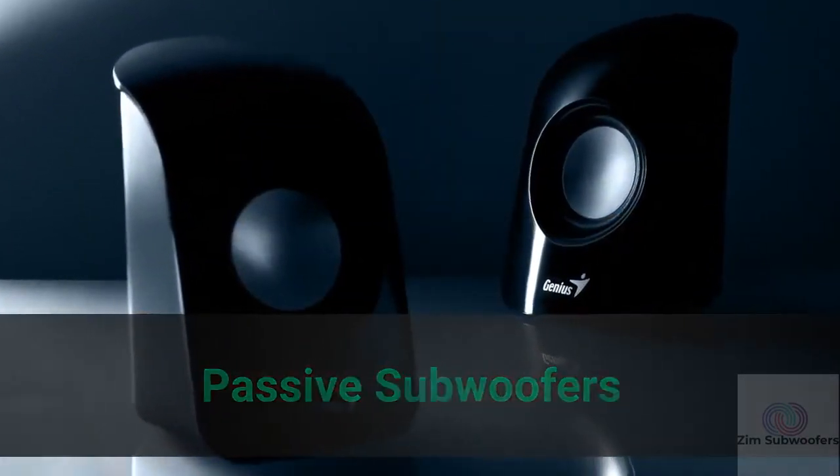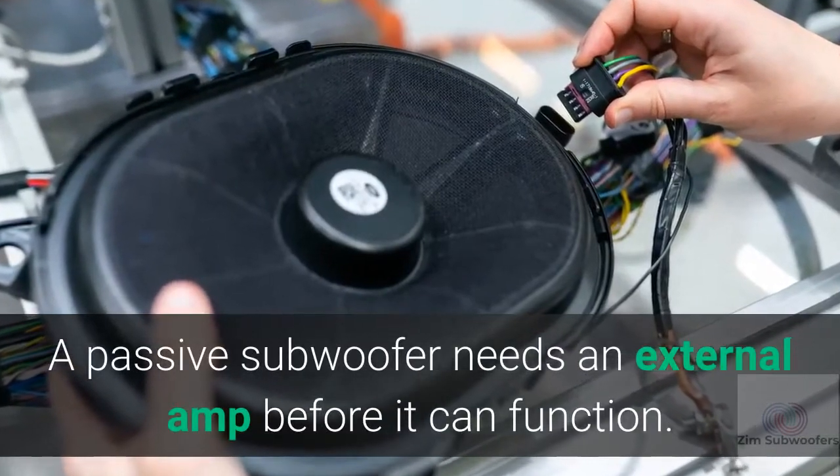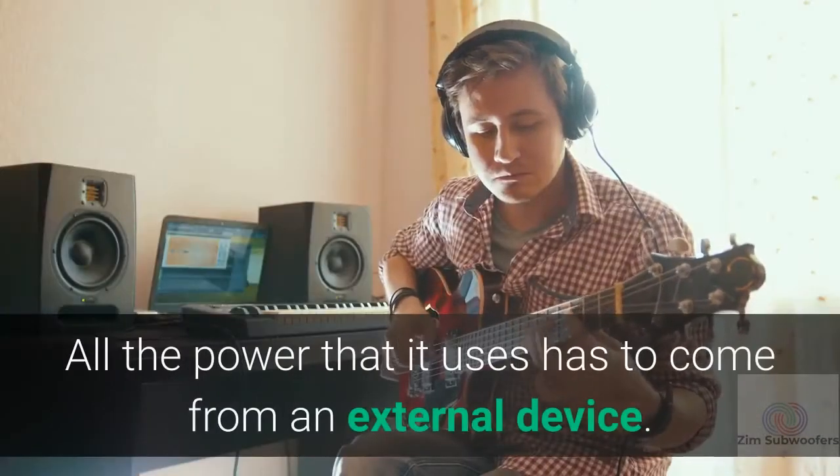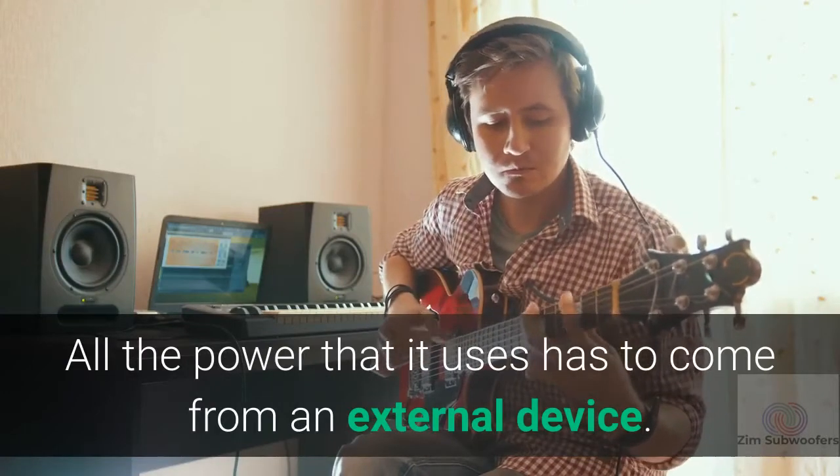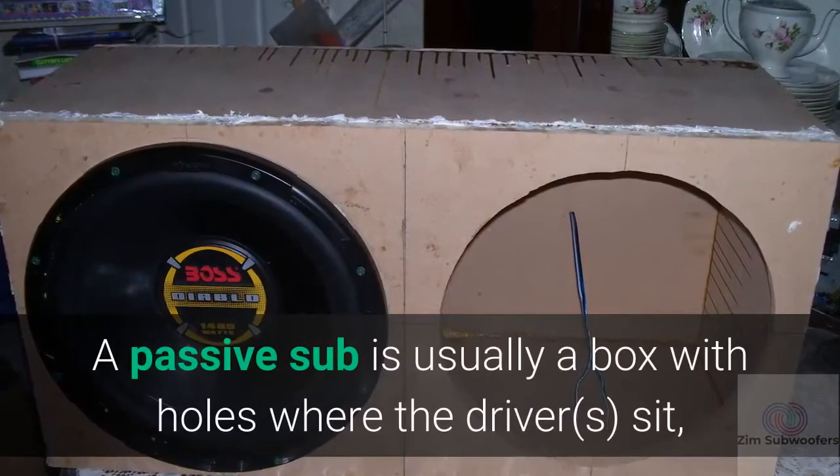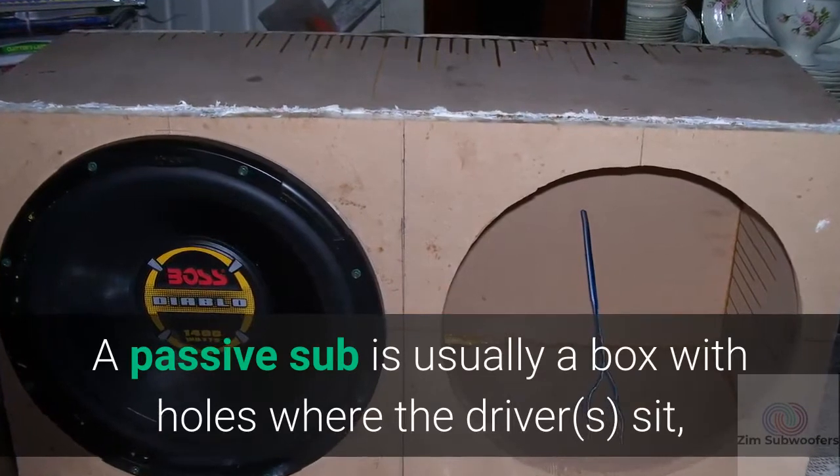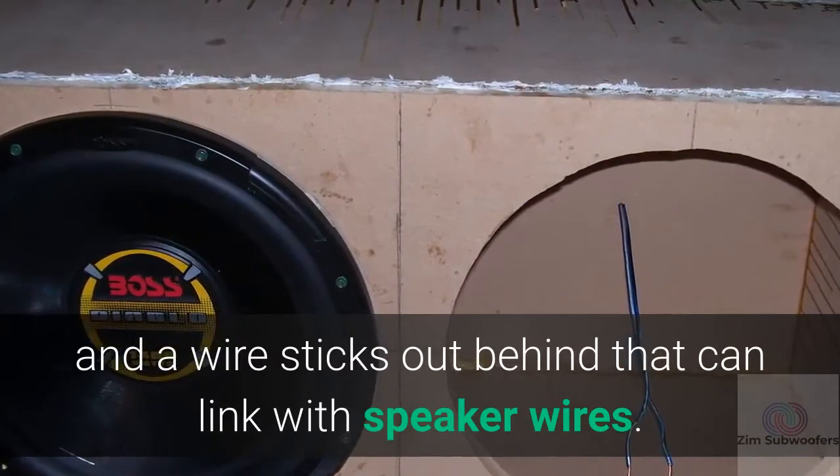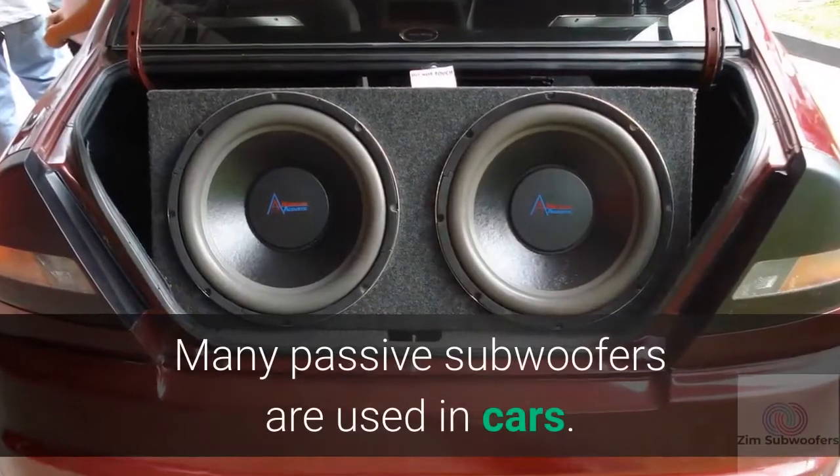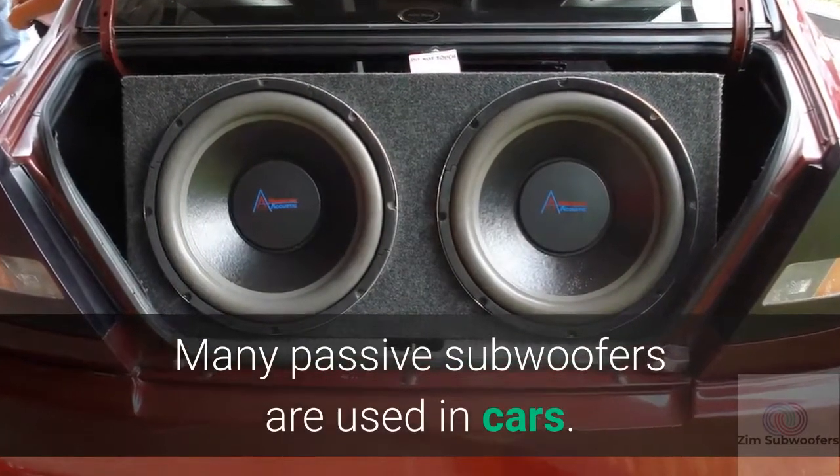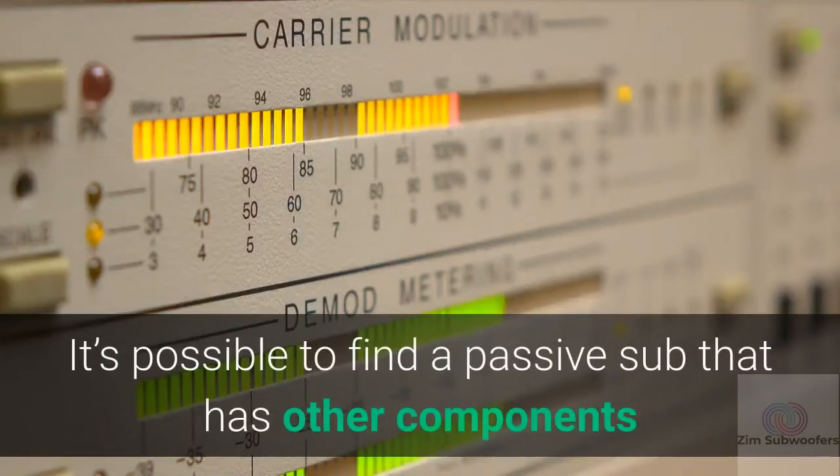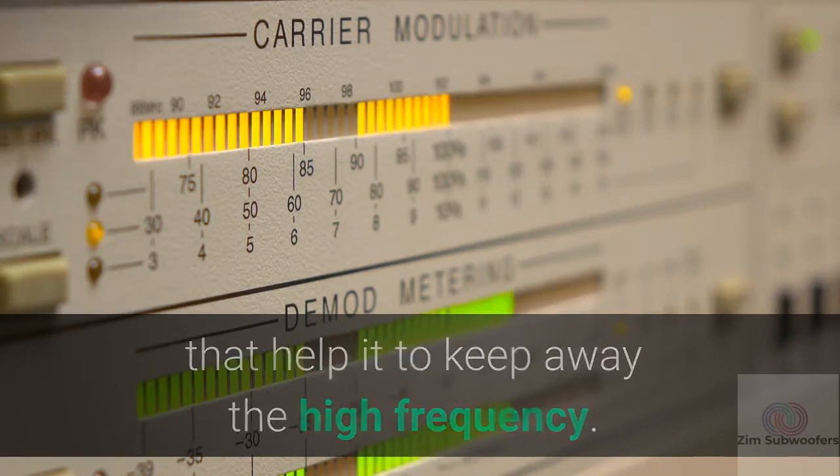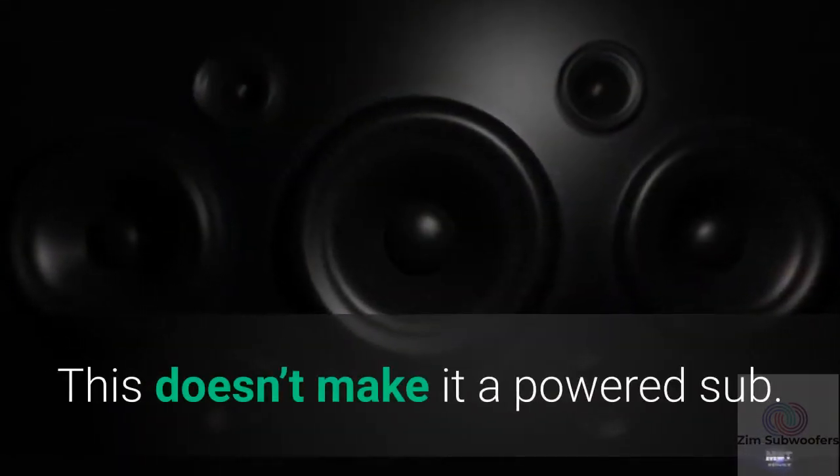Passive subwoofers need an external amp before they can function. All the power that it uses has to come from an external device. A passive sub is usually a box with holes where the drivers sit and a wire sticks out behind that can link with speaker wires. Many passive subwoofers are used in cars. It's possible to find a passive sub that has other components that help it to keep away the high frequency. This doesn't make it a powered sub.